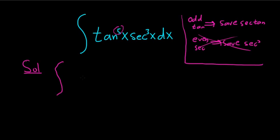So if we're saving one of the tangents, that leaves us with tangent to the fourth power. And if we're saving a secant, that leaves us with secant squared x. And we're saving a secant tangent, so we have secant x, tangent x, dx.